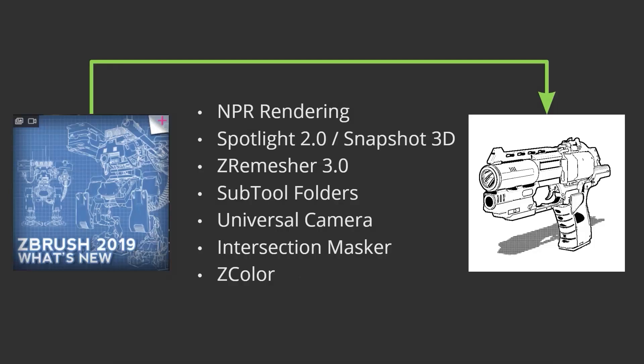ZBrush 2019 was a release where ZBrush came out with stuff I didn't even know I needed — ZRemesher 3.0, hard surface zero meshing, Spotlight Snapshot 3D, and NPR rendering. Instead of PBR rendering, we have non-photorealistic rendering for sketchy, stylized examples. Let's hop into the demo.